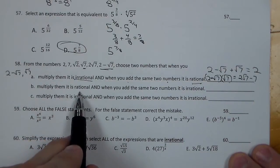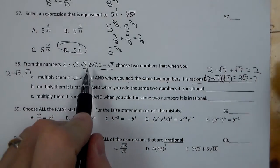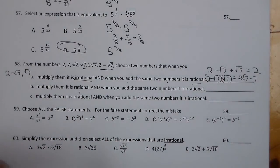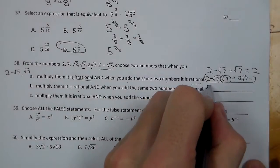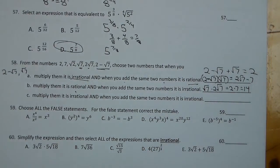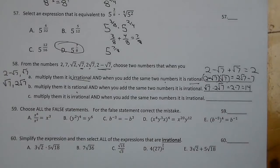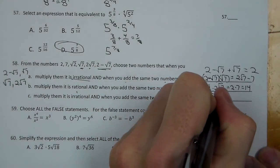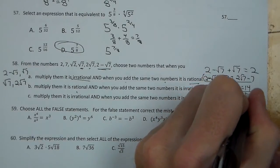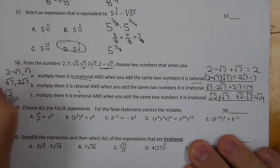For B, we want pairs that multiply to irrationals and also add to irrationals. Root 7 and 2 root 7 — when multiplied become 2 times 7, or 14, which is rational. But when added, they become 3 root 7, which is irrational. So the product is rational and the sum is irrational — that works. I'll say root 7 and 2 root 7. For the last part, multiply and add both give irrationals. I'll go with root 2 and root 7: root 2 plus root 7 is irrational, and root 2 times root 7 is the square root of 14, also irrational. Both work. So my answer is square root of 2 and square root of 7.